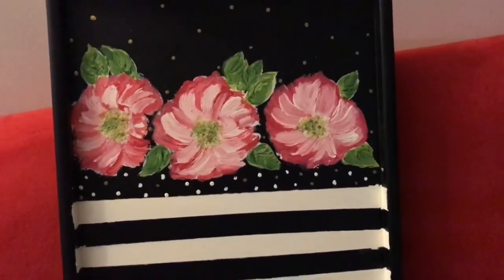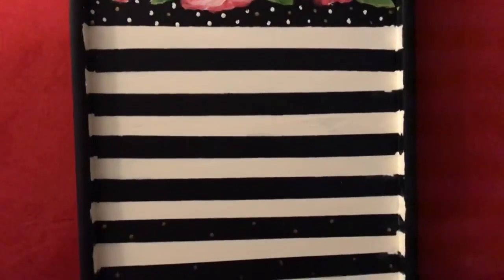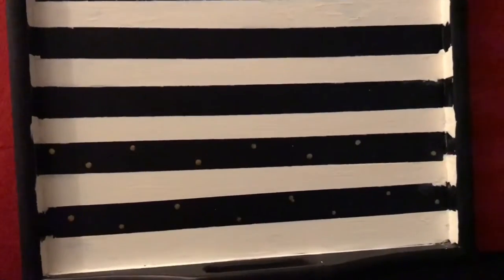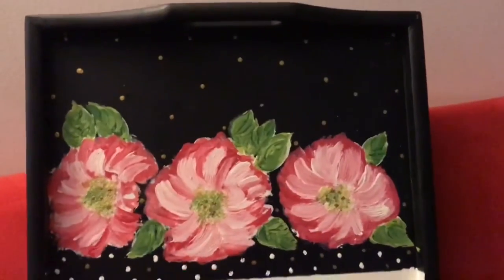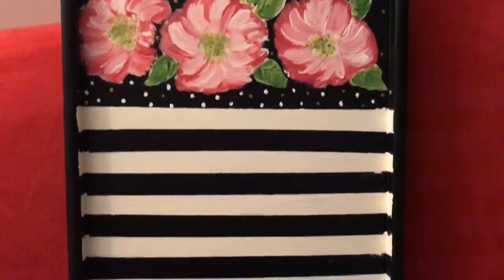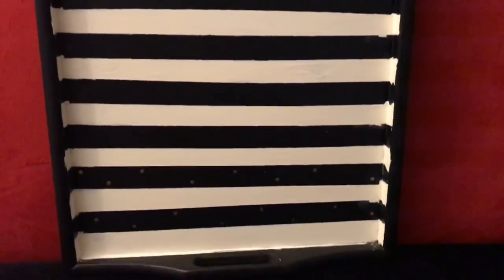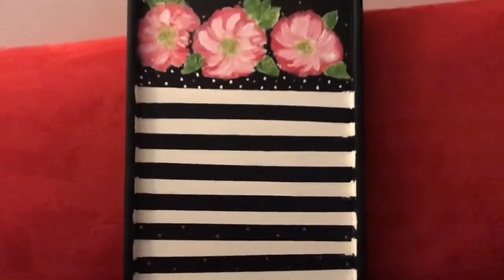This is the final look of my tray. I put some golden dots at the bottom and also at the top. And then I finished it with a sealer. And now, this is how it looks.